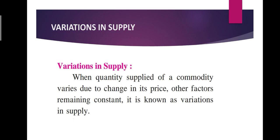When the quantity supplied of a commodity varies due to a change in its price, other factors remaining constant, it is known as variation in supply. That means other factors will be constant, and due to the change of price, if there are variations in supply, then we say variations in supply.